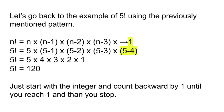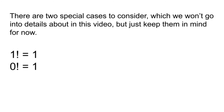Basically, the pattern is just to start with the integer and count backward by 1 until you reach 1, and then you stop. Before we go any further, there are two special cases to keep in mind: 1 factorial is equal to 1, and 0 factorial is equal to 1.